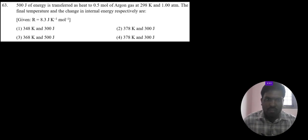500 Joule of energy is transferred as heat to 0.5 mol argon gas at 298 Kelvin and 1 atmosphere pressure. The final temperature and the change in internal energy respectively are. R value 8.3 Joule Kelvin inverse mol inverse is provided.